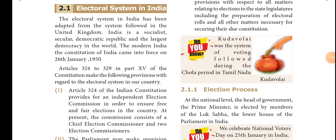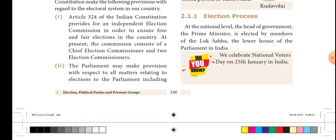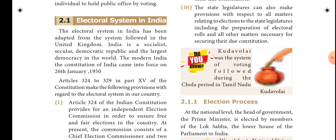Articles 324 to 329 in Part 15 of the constitution make provisions with regard to the electoral system in our country. Our constitution gives recognition and rights to conduct elections. Articles 324 to 329 deal with the provisions of the electoral system in India.